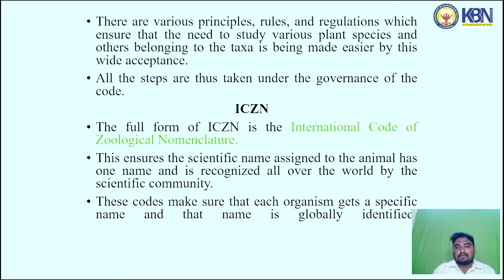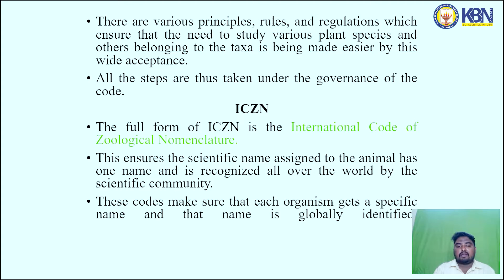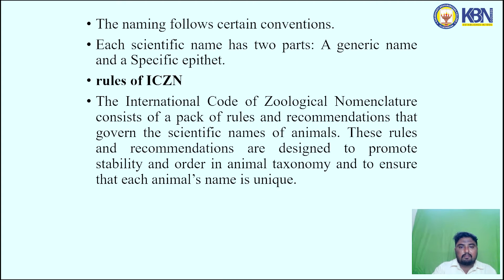The full form of ICZN is the International Code of Zoological Nomenclature. This ensures that the scientific name assigned to animals has one name recognized all over the world by the scientific community. Each organism gets a specific name that is globally identified. The naming follows certain conventions: each scientific name has two parts — a generic name and a specific epithet.